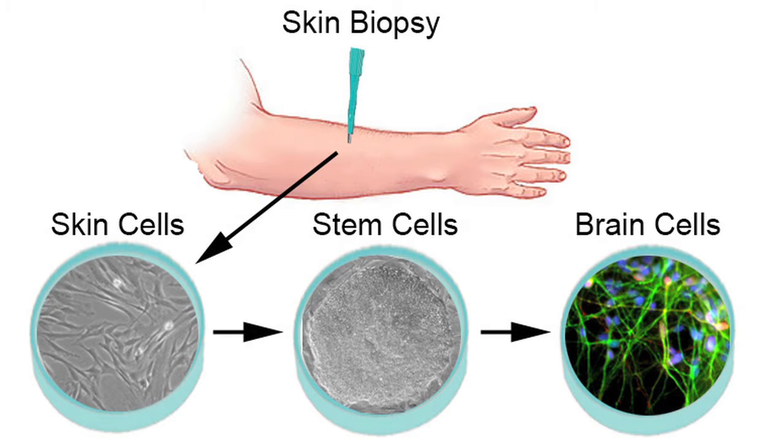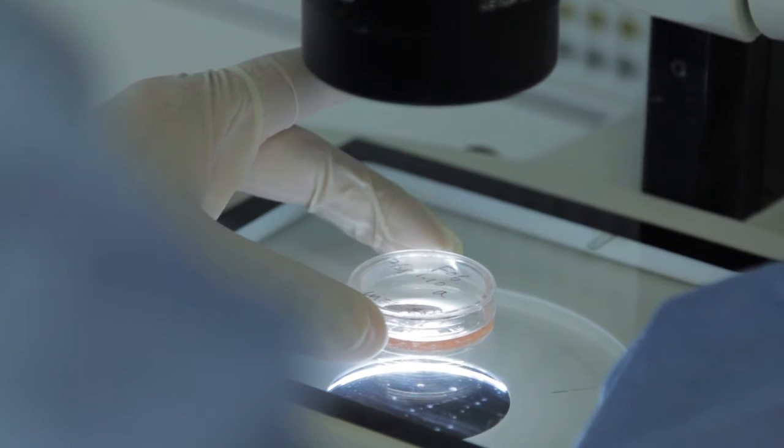We've taken skin samples, biopsies, from patients who have been diagnosed with bipolar disorder and we've reversed the clock and turned them into stem cells and then used those stem cells to differentiate into neurons.